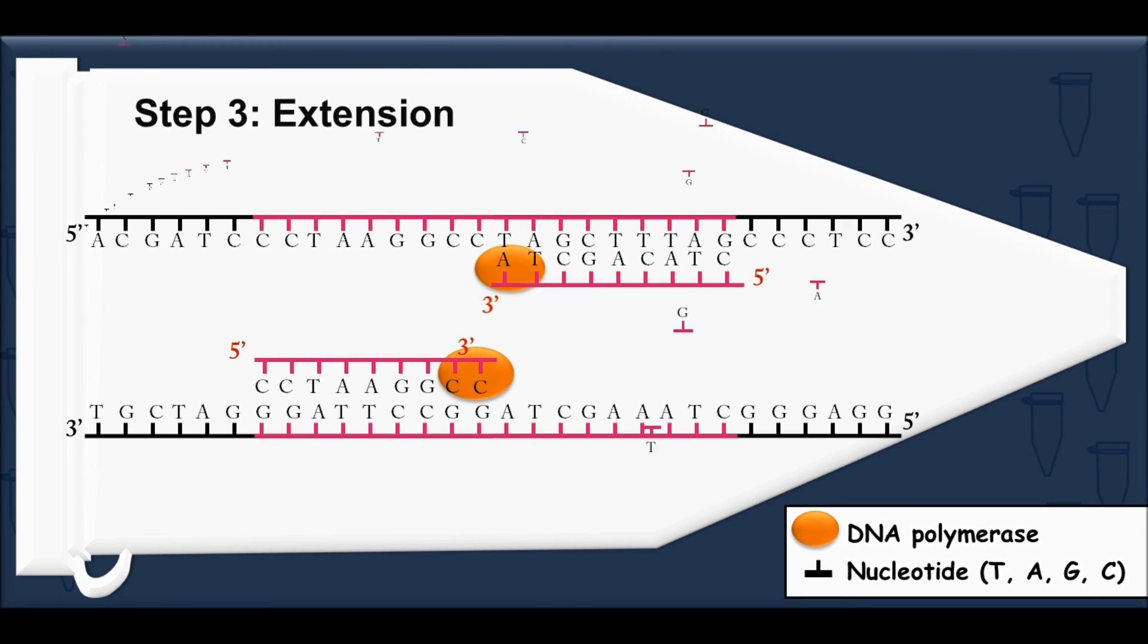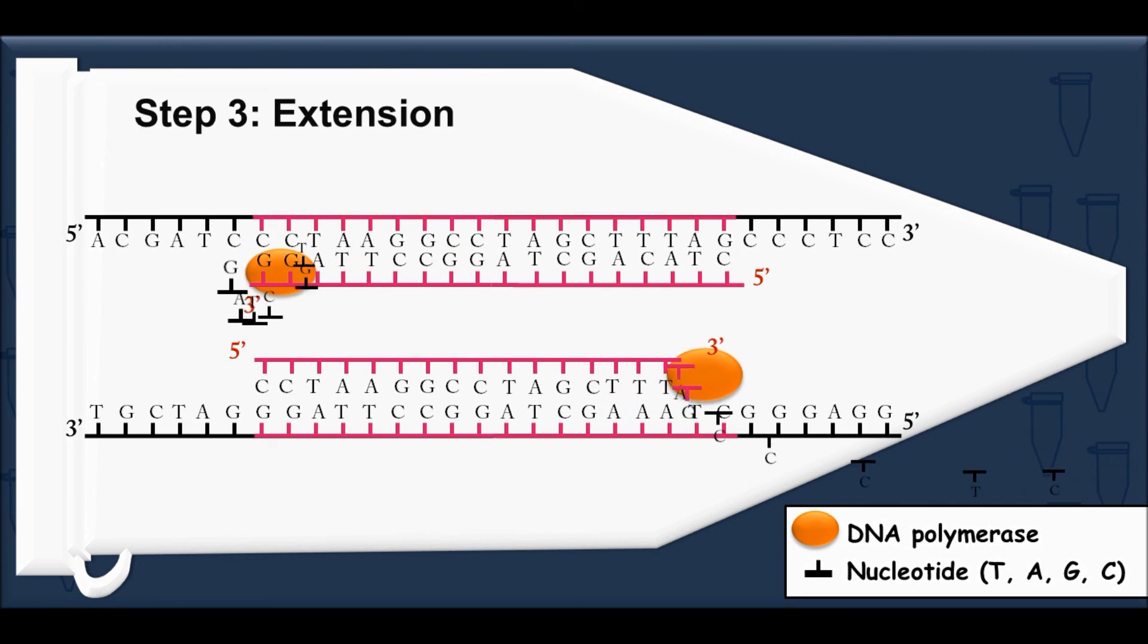In the extension step, the DNA polymerase binds to the 3' end of each primer on each strand and starts assembling free nucleotides that are complementary to the DNA strand to build a new strand.